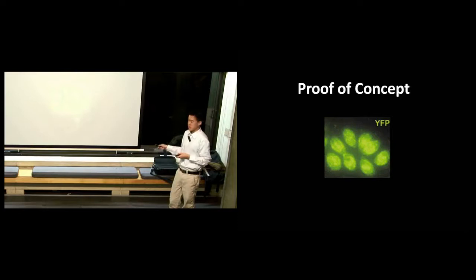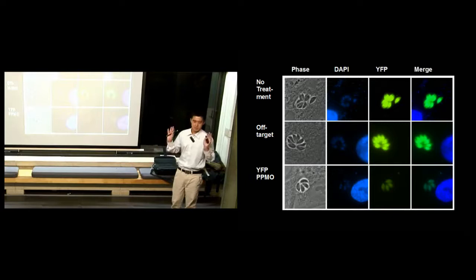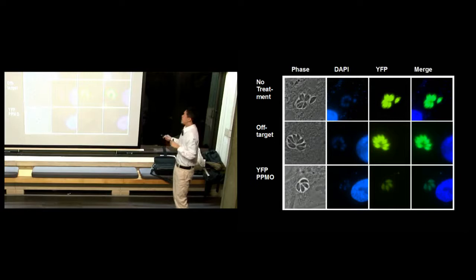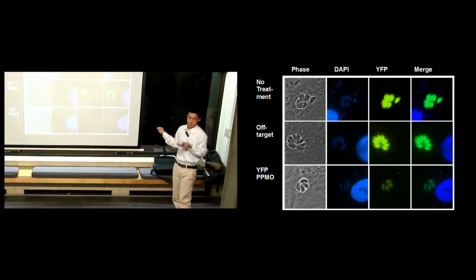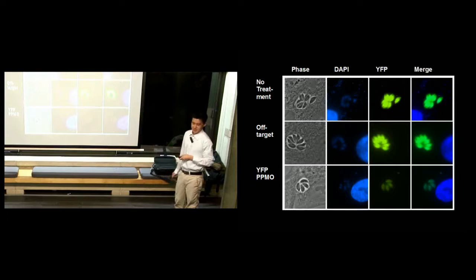First, we're going to inhibit fluorescence in fluorescent parasites. Before I show you the data, I just want to say these are scientific results, so there are going to be controls. But I'm not going to bore you with the controls today. I'm just going to present the take-home message from each slide. All I want to show in this slide is that when you add in the drug, you see a diminishing amount of fluorescence in comparison to the absence of treatment.